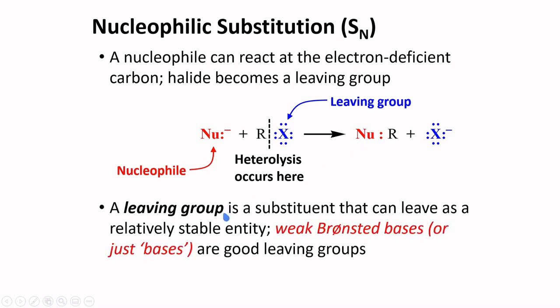A leaving group is a substituent that can leave as a relatively stable entity. Weak Bronsted bases, or just termed here as bases, are good leaving groups because of their relative stability.